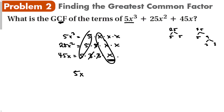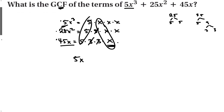A shortcut: for numbers, find the biggest number that divides into all terms — that's 5, and since it's prime, everything must be divisible by 5. For variables, take the smallest degree of any common variable. The bottom term has just one x, so that's the greatest x we can include. Numbers: biggest divisor of all terms. Variables: smallest degree.